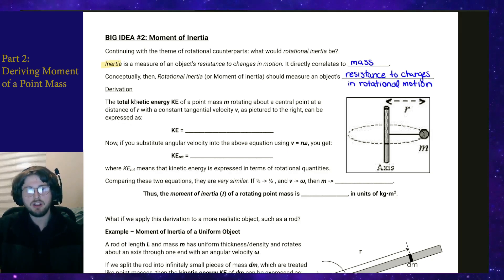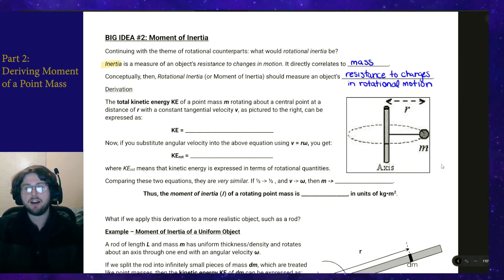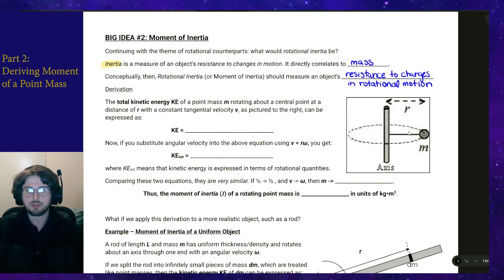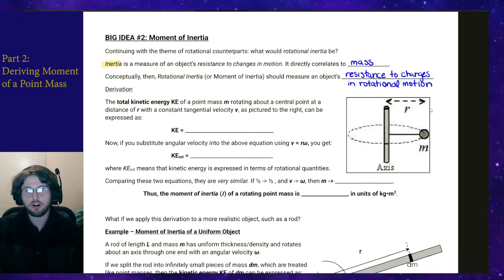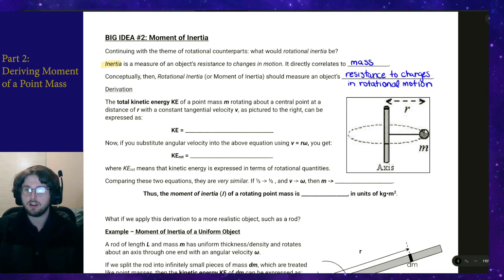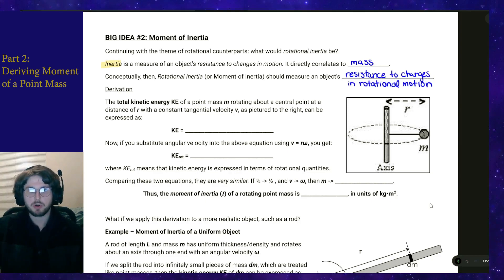To get thinking about how we could get a formula for this, we're going to think about the kinetic energy of an object. Let's suppose that we have a point mass in circular motion around some central axis, like we've got pictured over here. It has a mass M, it's a distance R away from the axis, and it's moving with a constant tangential velocity V — uniform circular motion.